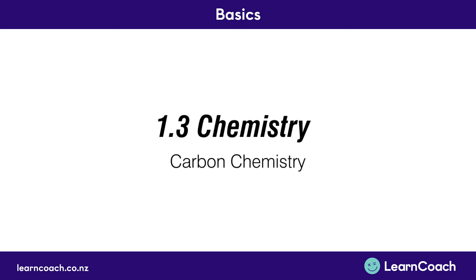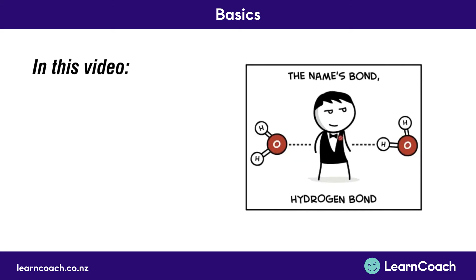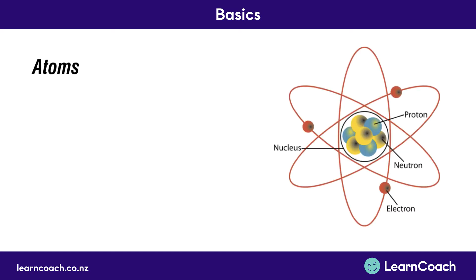Welcome to the first video for 1.3 chemistry, carbon chemistry. In this video, we're going to start by looking at atoms, and then we'll talk about electron shells and how covalent bonding occurs. So first we'll talk about atoms.